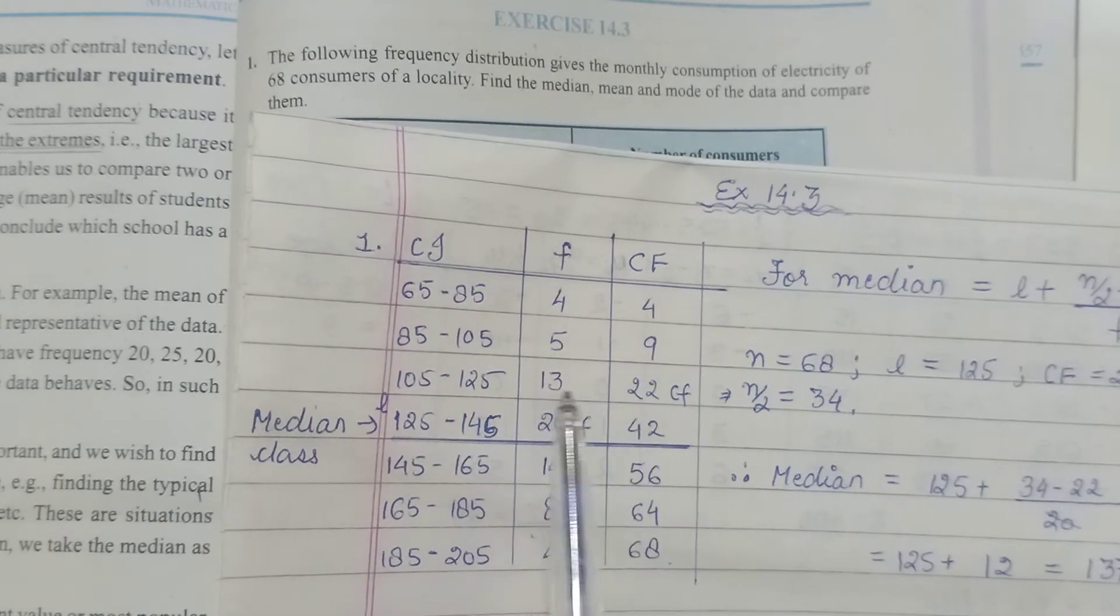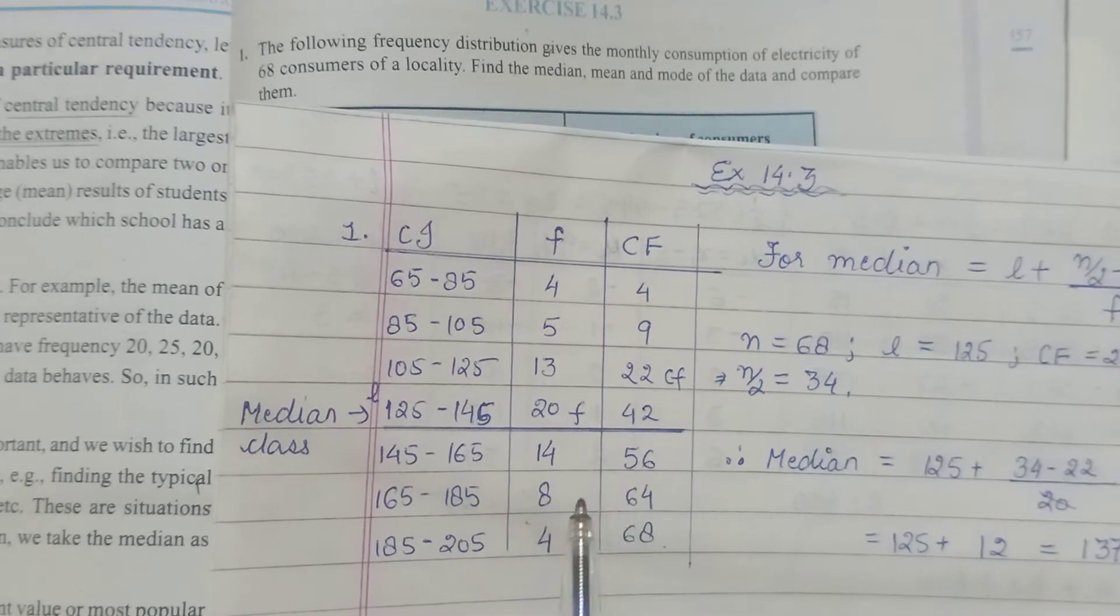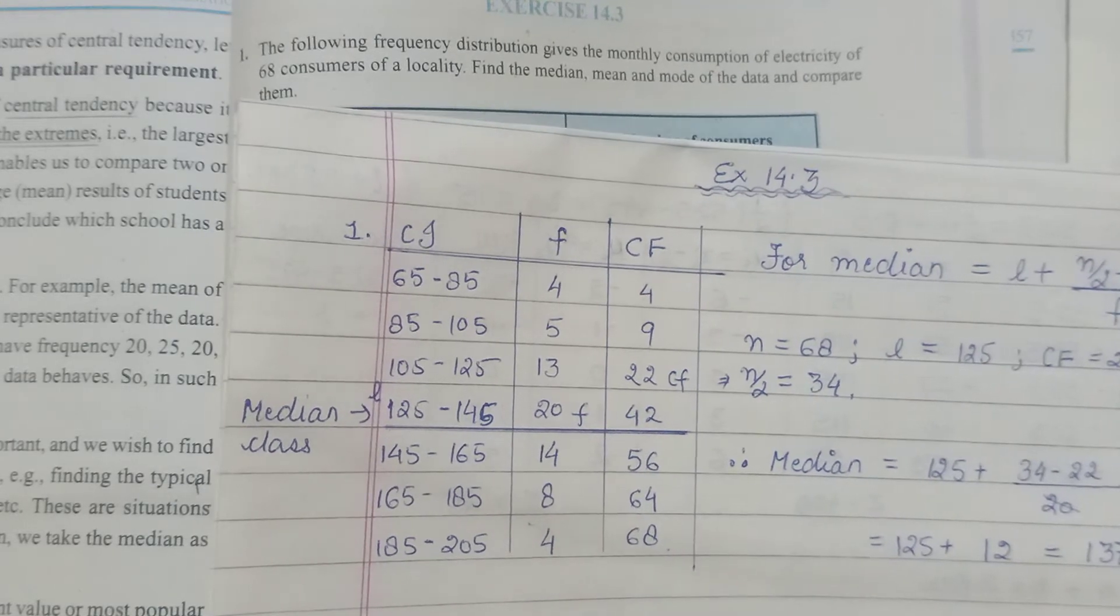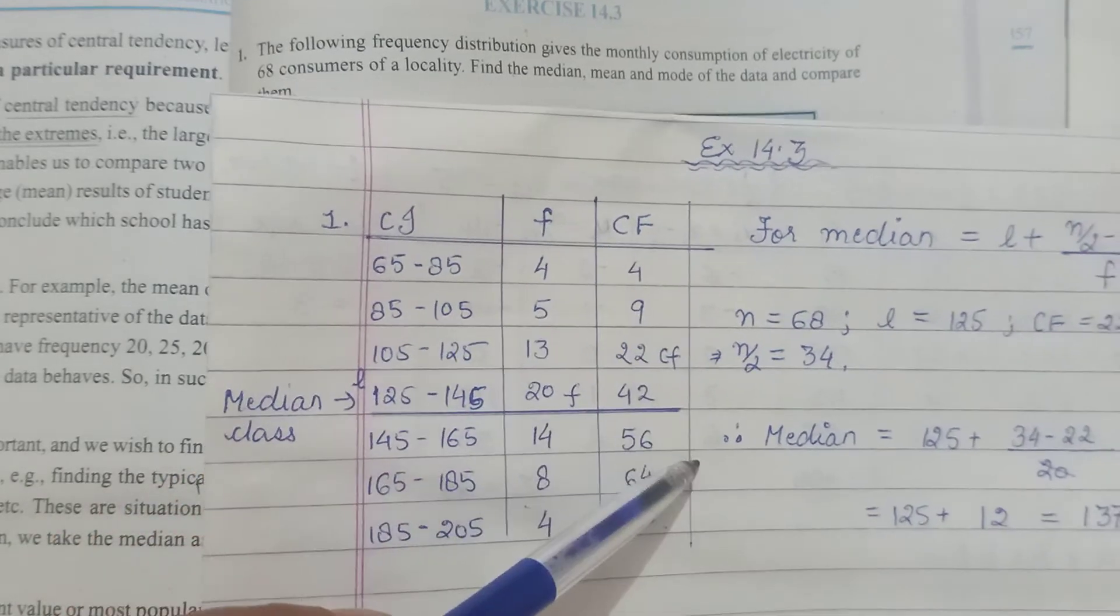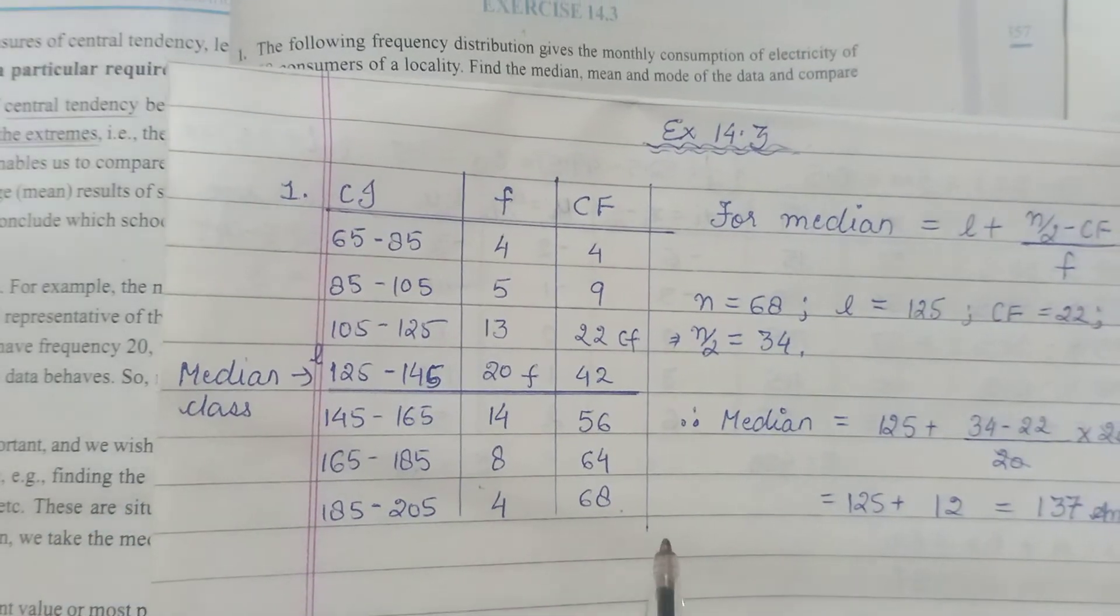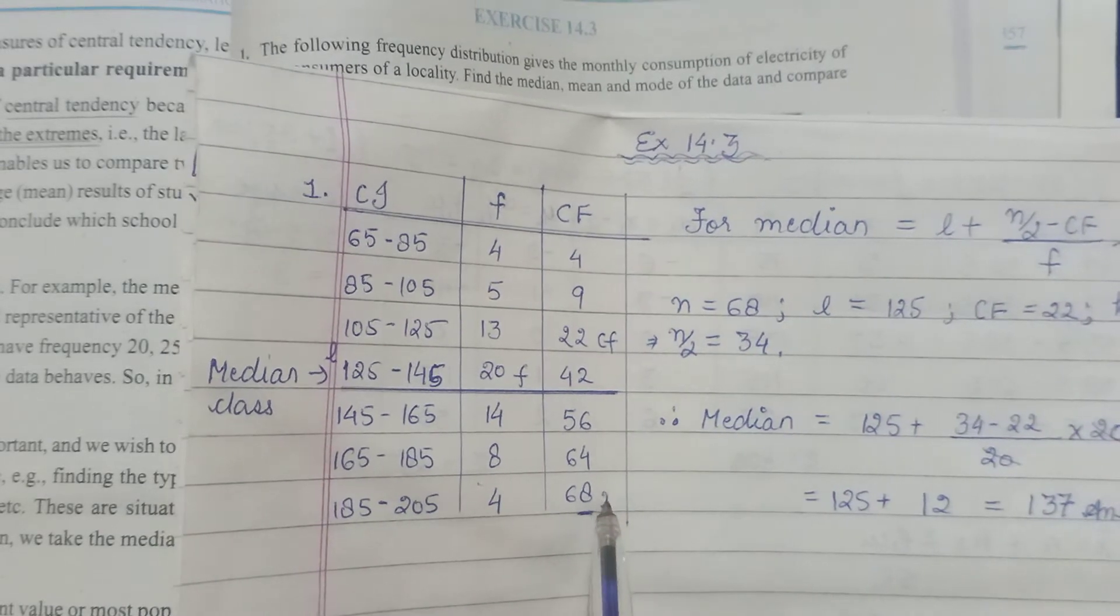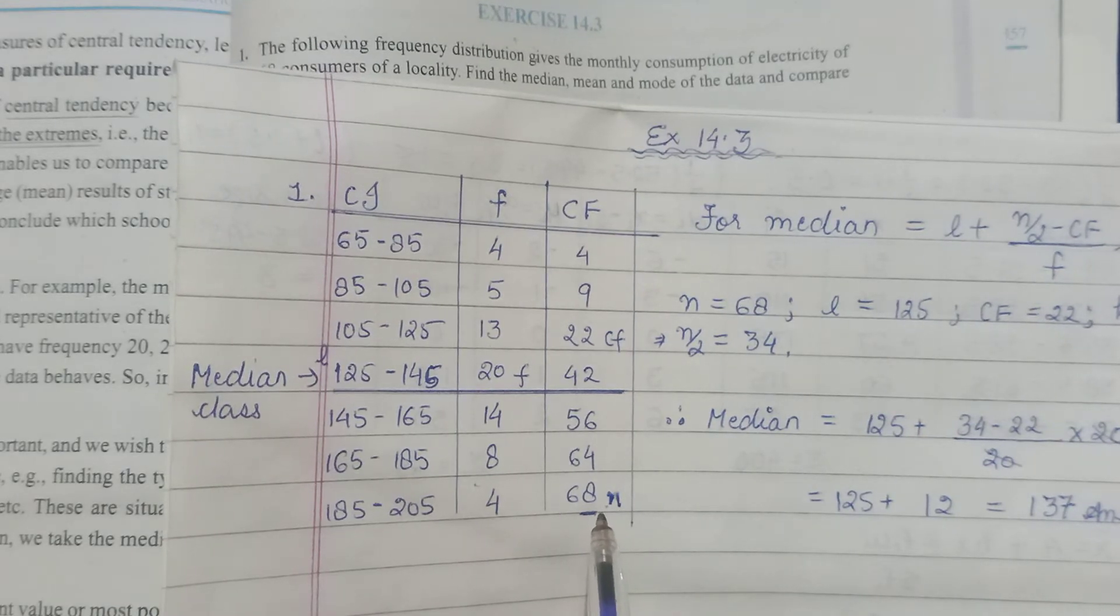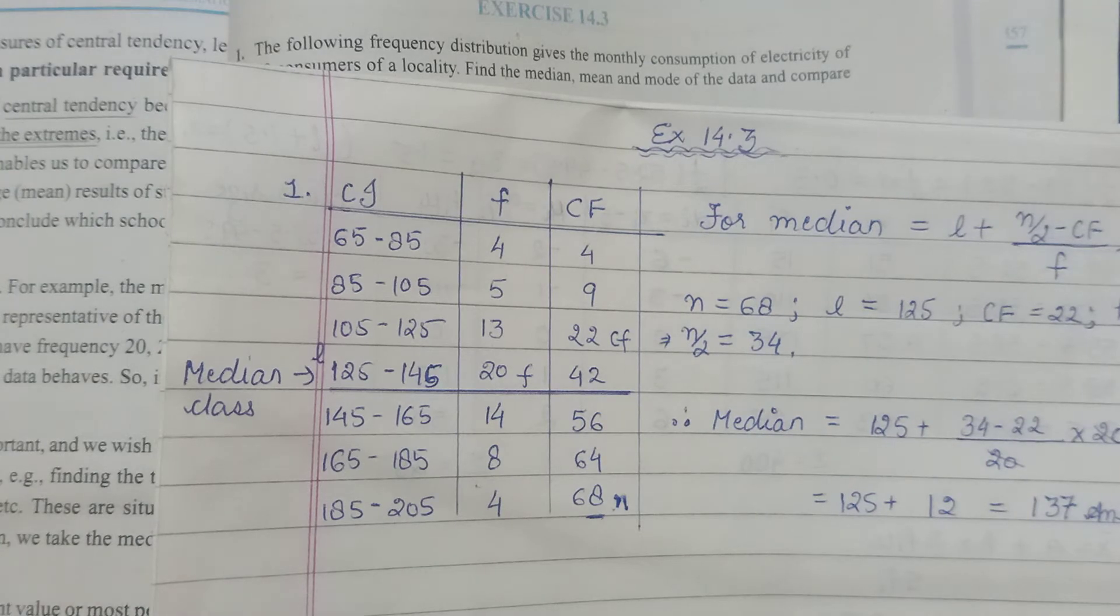We are accumulating, collecting all the frequency. CF for the first class has to be obviously the same. For the next will become 5 plus 4 is 9, 9 plus 13 is 22, 22 plus 20 is 42, 42 plus 14 is 56, 56 plus 8 is 64, 64 plus 4 is 68. That is how it comes. The last entry of CF is automatically your n, total number of observations.